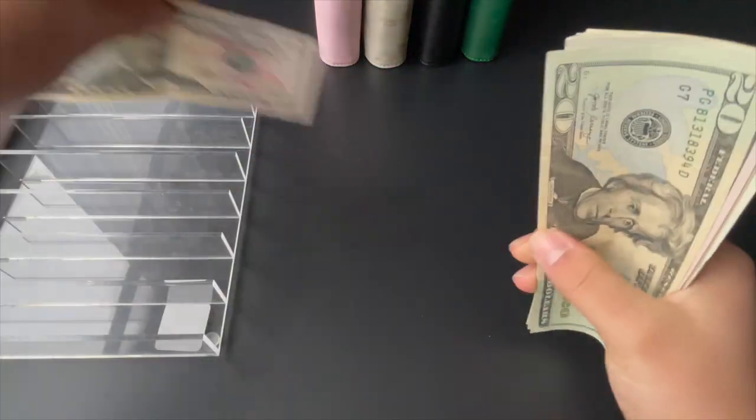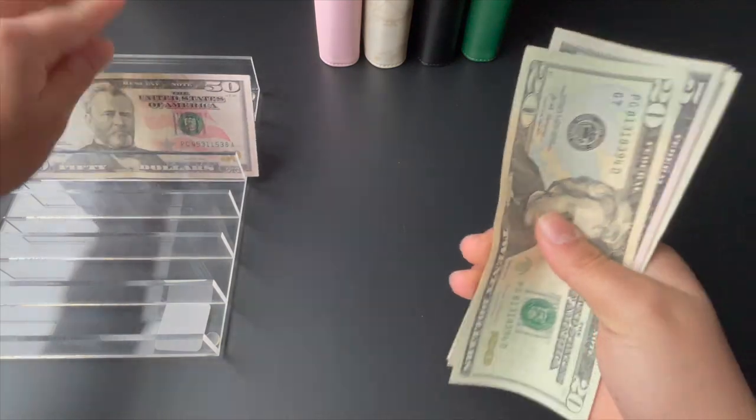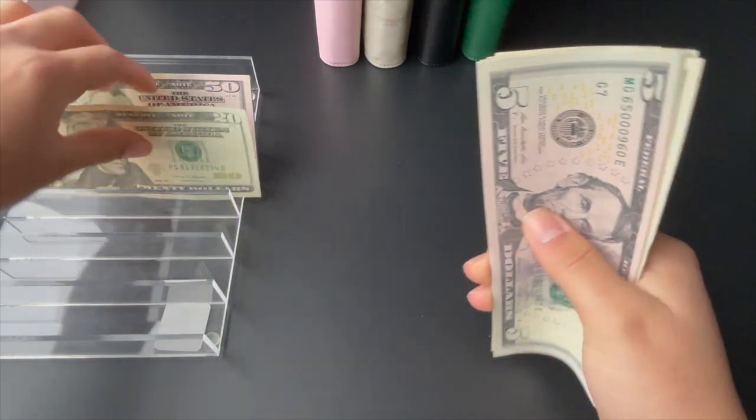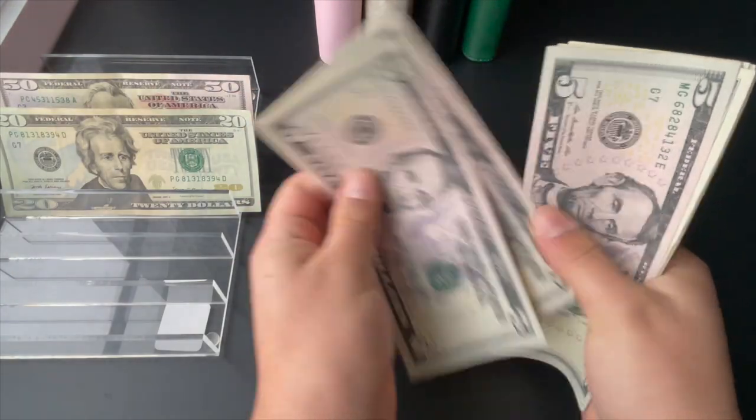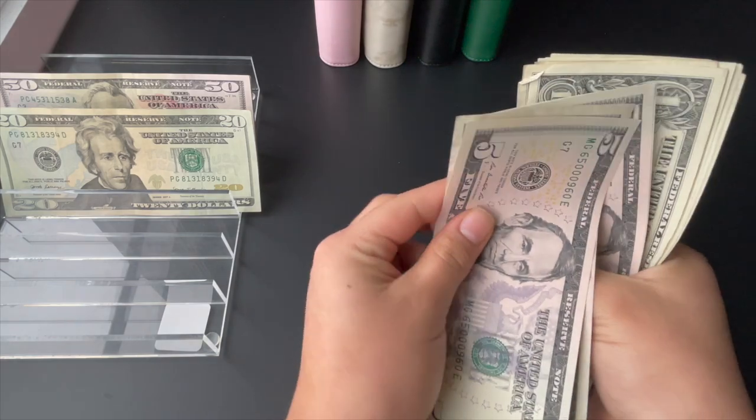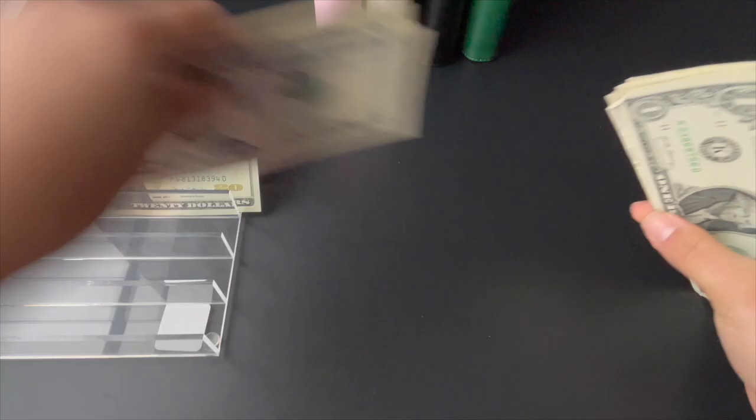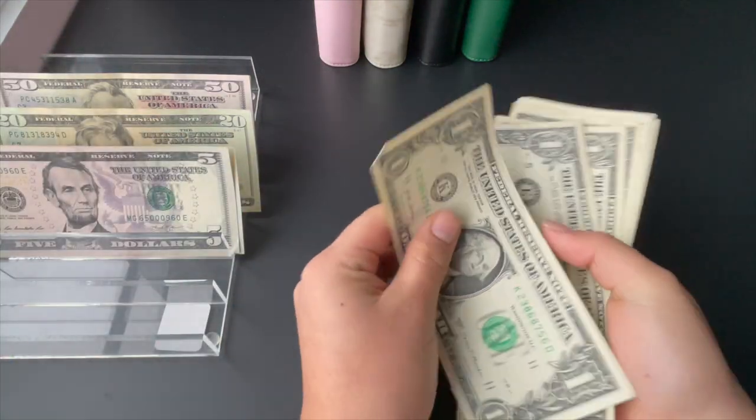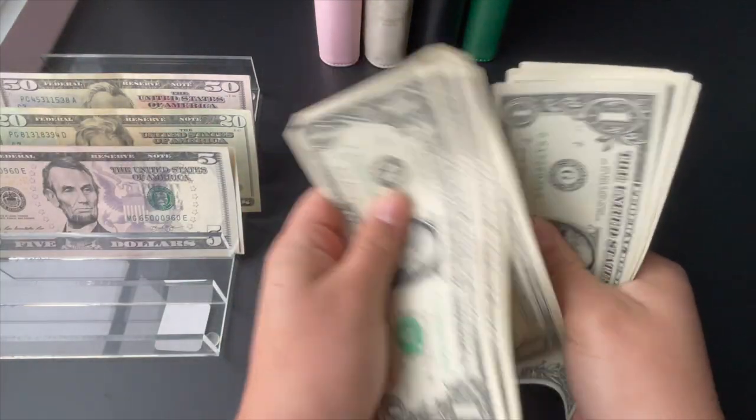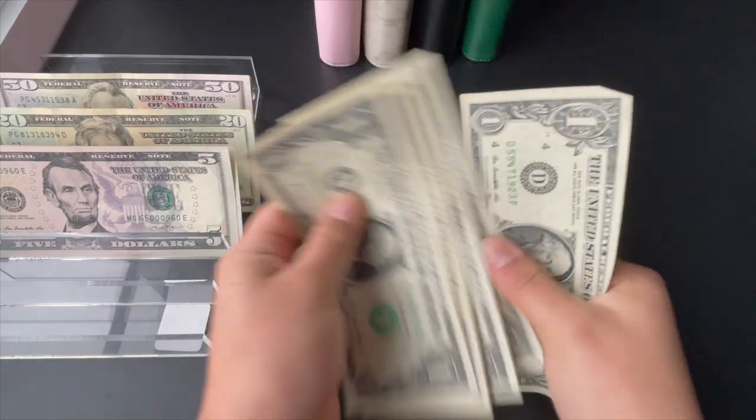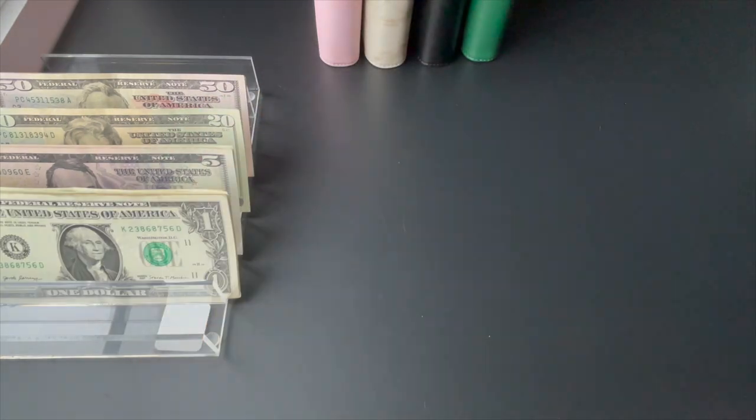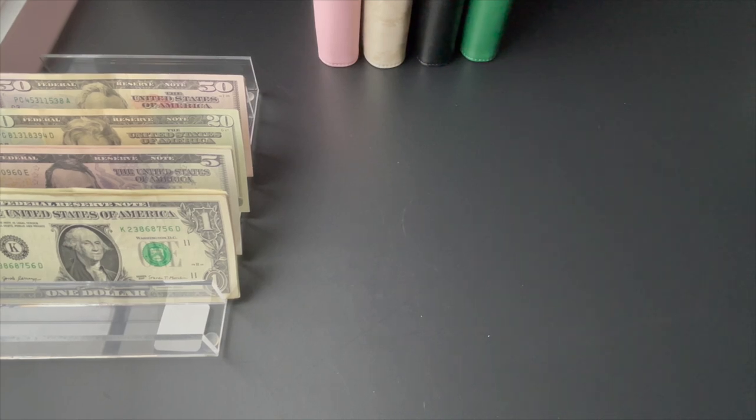Fifty-one, twenty, five, thirty, five, and forty. One, two, three, four, five, six, seven, eight. So $148 is what we are cash stuffing today.